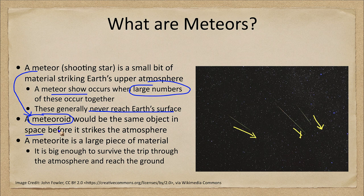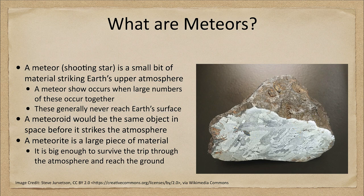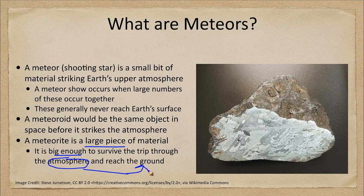Now, while meteors generally never reach Earth's surface, there are cases where they do — and when they do, we get a meteorite. That's an actual bit of material that we can hold here on Earth. Here is an example of one of those meteorites. The meteorite is simply a larger piece of material, something big enough to survive the trip through the atmosphere and land on the ground. Most of the original particles are grains of sand and they never make it down.